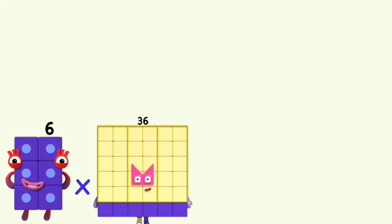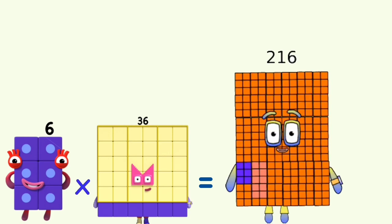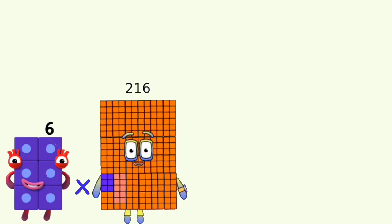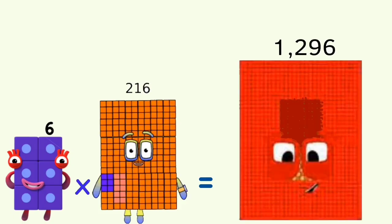6 times 36 equals 216. 6 times 216 equals 1,296.